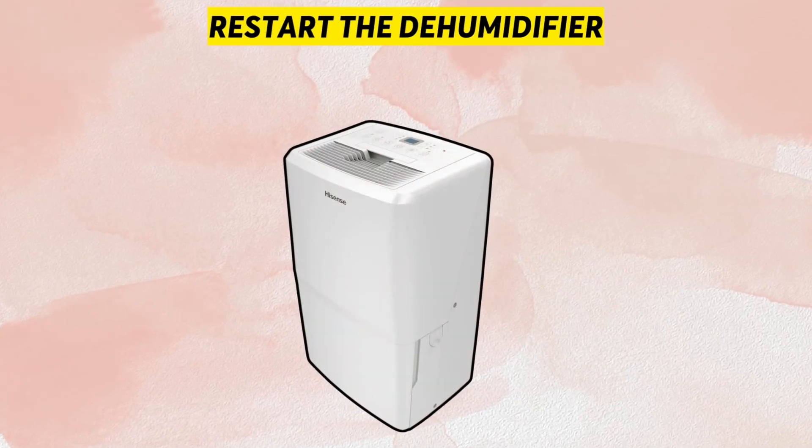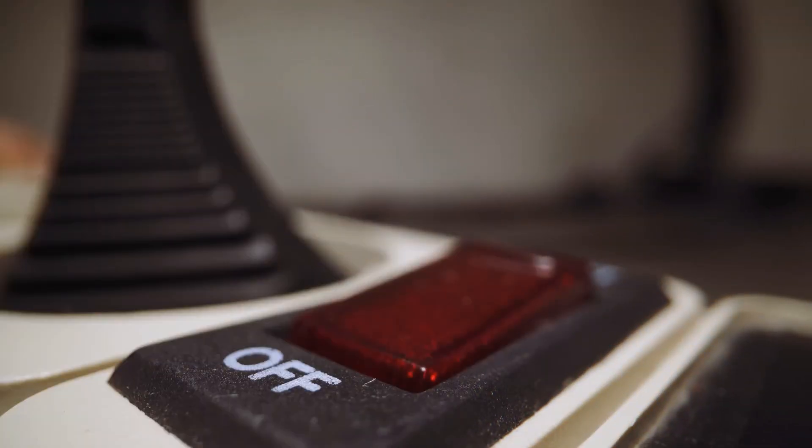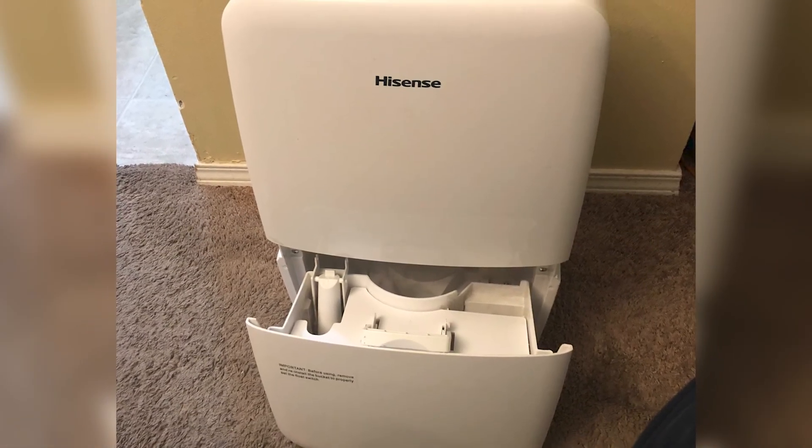Restart the dehumidifier. If you suspect a problem with the circuit board, do this: Switch off the dehumidifier and unplug it. Wait for a few minutes and then switch it on. This will clear any settings affecting the circuit board and restart the dehumidifier.